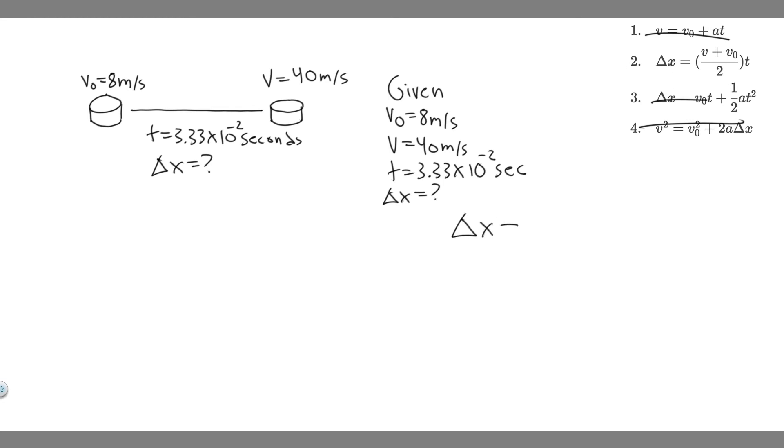All we got to do is just plug it in. So delta x is going to equal v plus v sub 0. v is 40 plus v sub 0, which is 8, divide by 2. 40 plus 8 is 48, then divide by 2, which is 24. So I'm simplifying this to 24, and then multiply the time, which is 3.33 times 10 to the minus 2. 24 times 3.33 times 10 to the minus 2, you're going to get delta x equals 0.7992, measured in meters.